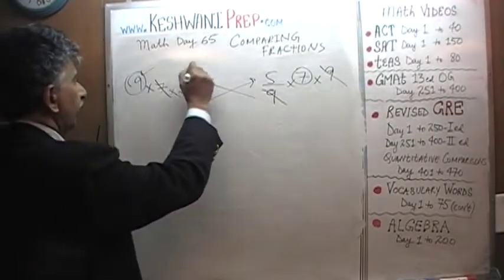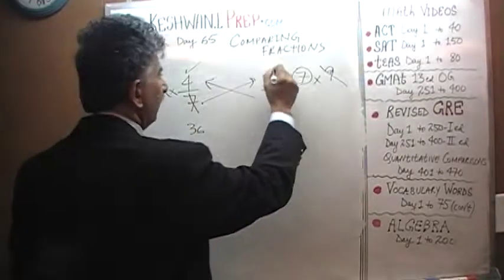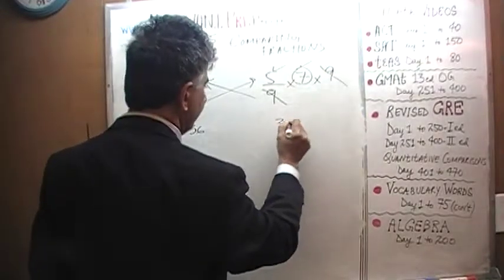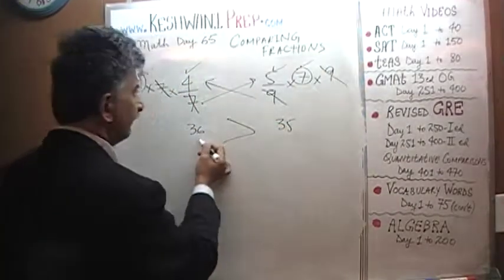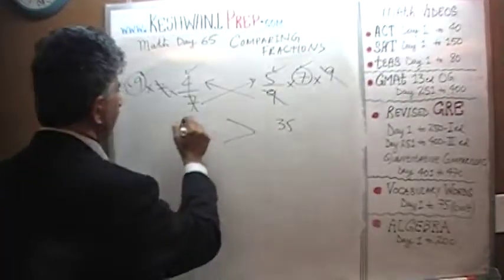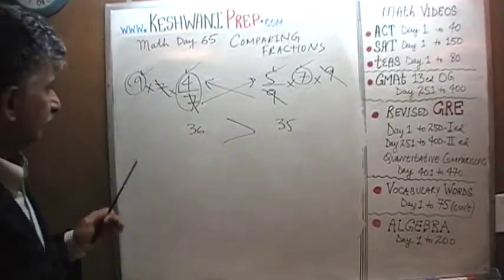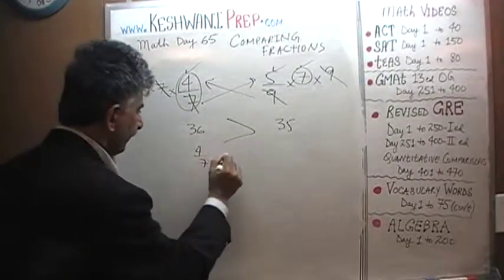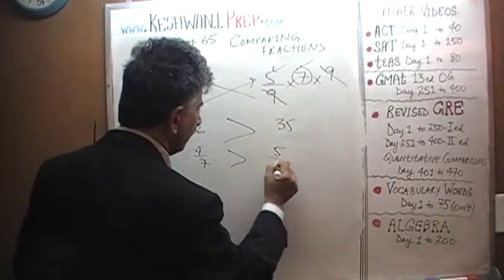So we end up with 9 times 4 which is 36. And 5 times 7 which is 35. 35 of course is less than 36. Therefore 4 sevenths is the bigger fraction. 4 sevenths is the bigger fraction than 5 ninths.